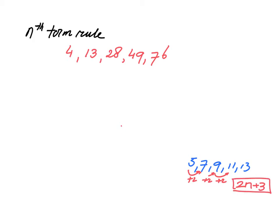You can check that always. Let's do term 4. So 2 times 4 is 8, plus 3 is 11. Counting 1, 2, 3, 4, indeed it is 11.